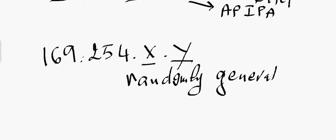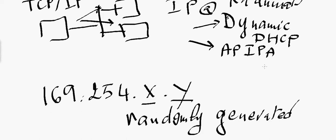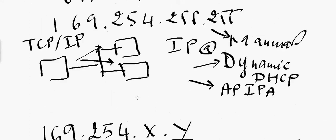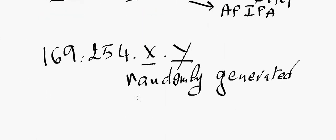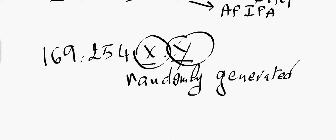Every computer connected to a network that doesn't have a static IP address and cannot obtain an IP address from a DHCP server will assign itself an APIPA address, which runs from 169.254.0.0 up to 169.254.255.255. These two bytes, X and Y, are randomly generated by each computer.